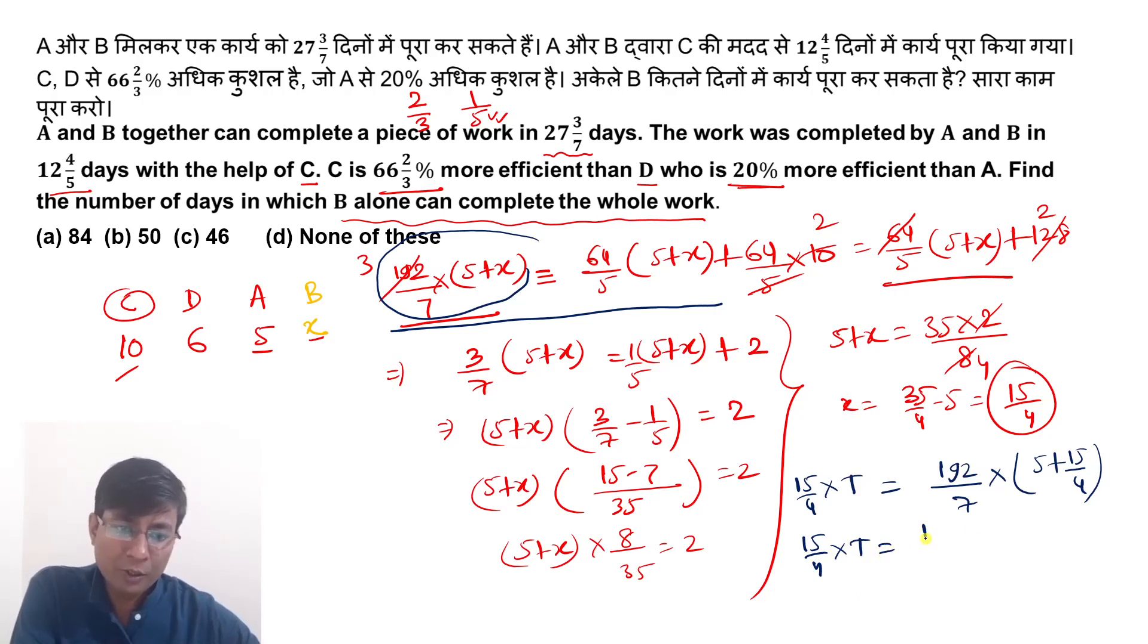This will be 35 by 4. Four will cancel with four, seven divides here five times, five divides here three times or five times. 64 times.